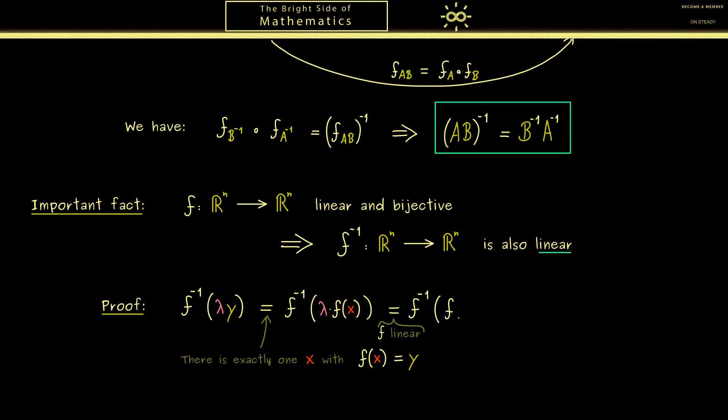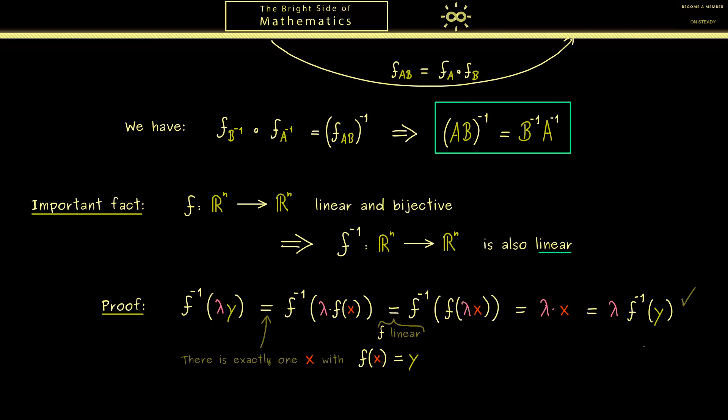So we have f of lambda times x. And with this we are almost finished because we can eliminate f inverse and f. They are inverses of each other so what remains is lambda times x. And now if you remember that x is simply f inverse of y we are finished. Because you see then we have lambda times f inverse of y. So if you read it from left to right you see we simply have pulled out the scalar factor lambda. So in conclusion the scalar multiplication is finished.